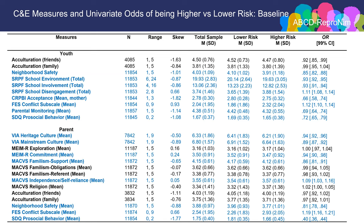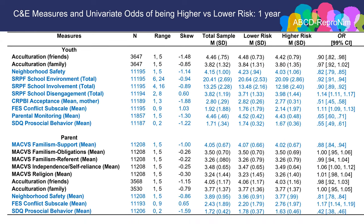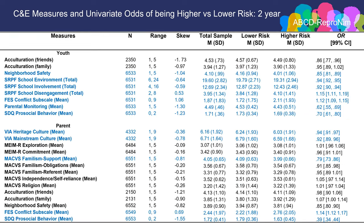Measures like acculturation and participation in cultural heritage items were always thought to be more potential mediators and moderators rather than direct predictors of behaviors, so it's fine that some were not significant. Very similar results appear at the one-year and two-year follow-ups — all things that were significant remain significant, and effect sizes are of comparable magnitude across all three waves.